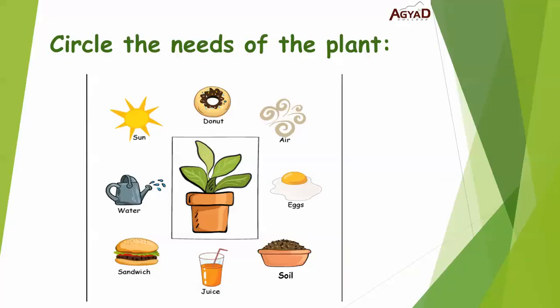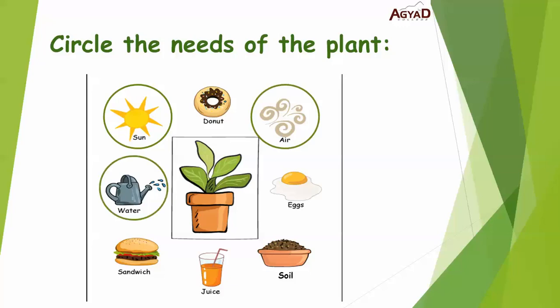Circle the needs of the plant. It needs sun. But does it need a donut? No. Air? Yes, exactly. What about water? For sure. Does it need a sandwich or juice? Of course not. What does it need? Soil? Excellent.